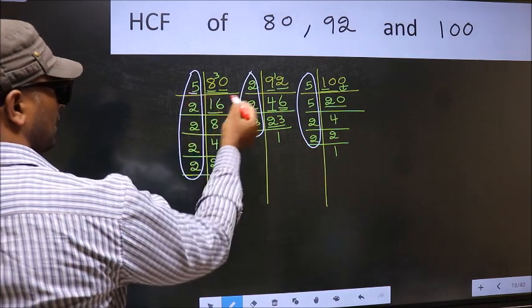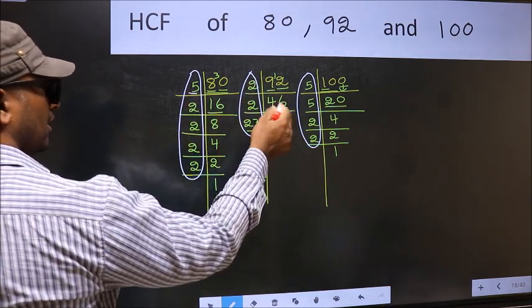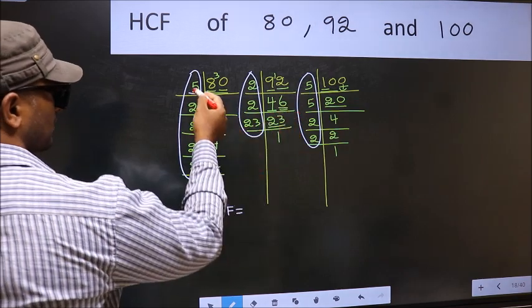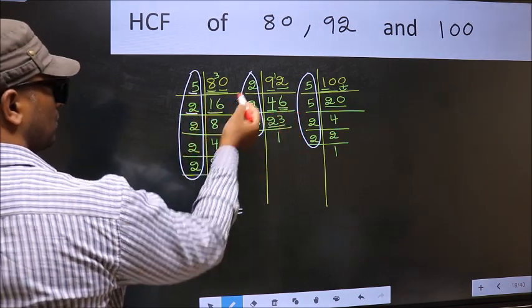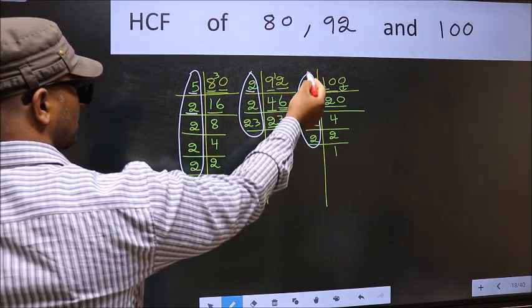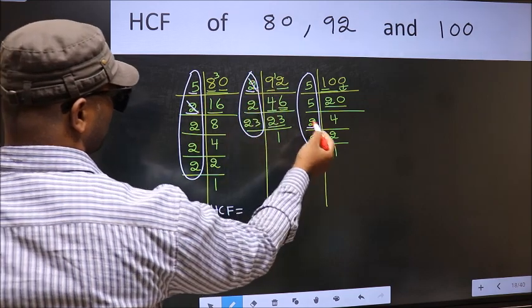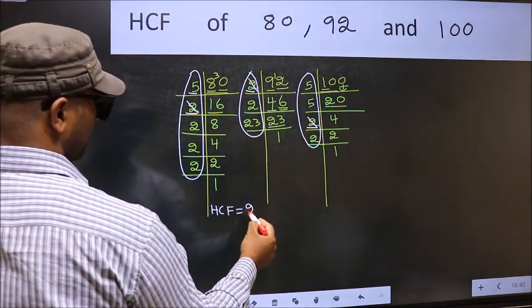Starting with the number 5. Do we have 5 here? No. So no need for us to check in the other place. Next number 2. Do we have 2 here? Yes. So go to the next place. Do we have 2 here? Yes. So cut 2 right here.